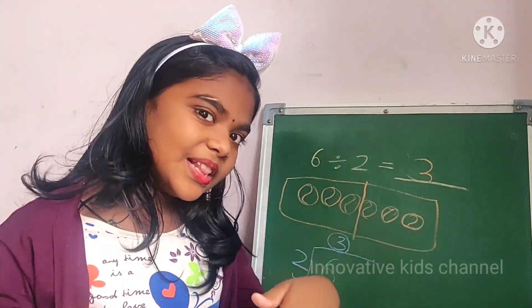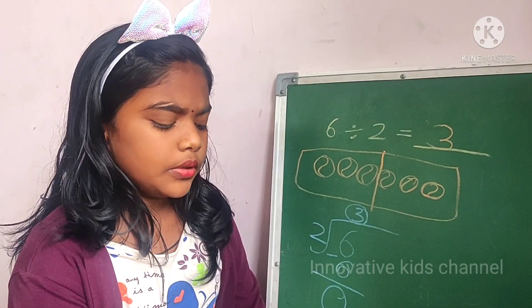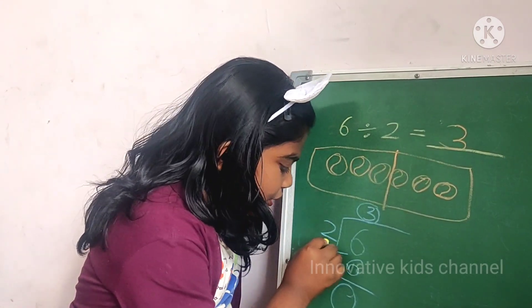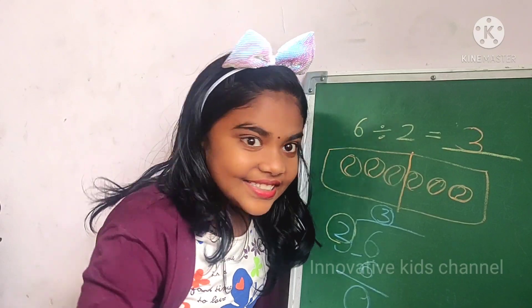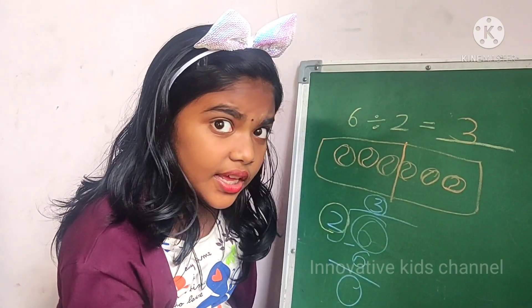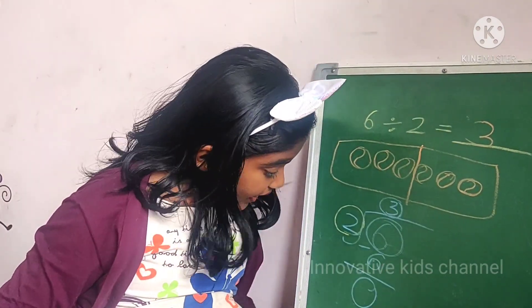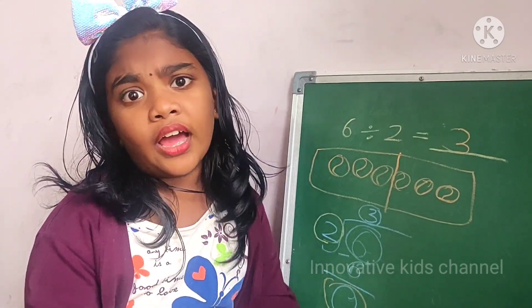If you have any doubts, comment below. Tell me, which is the divisor? Two. Two is the divisor. And which is the dividend here? Six. Six is the dividend. Which is the quotient? Three is the quotient. Correct. The remainder? Zero is the remainder.